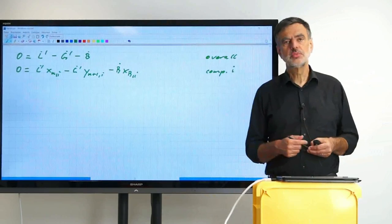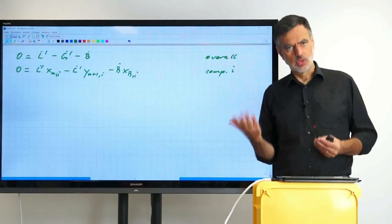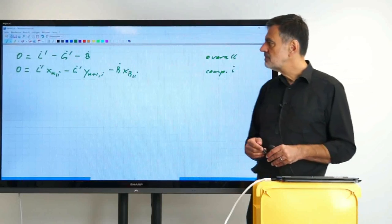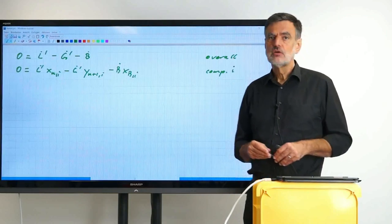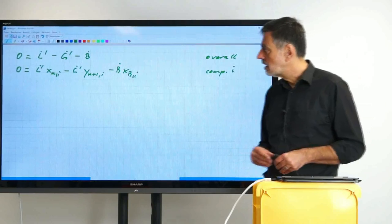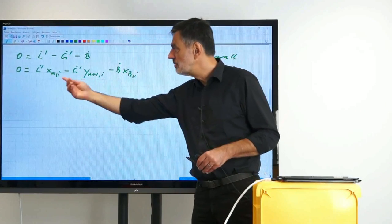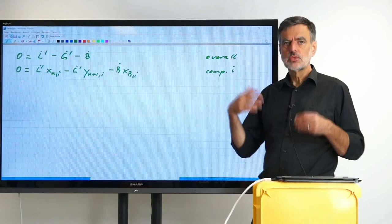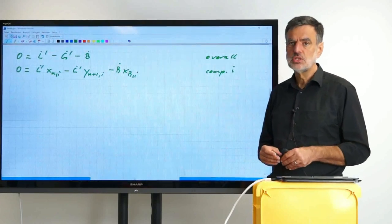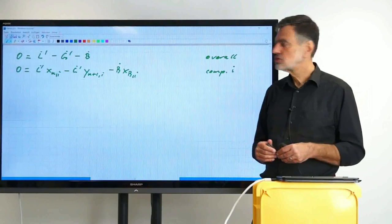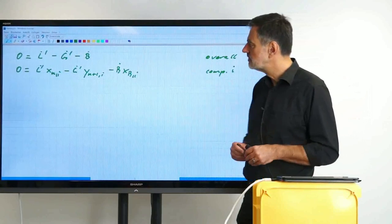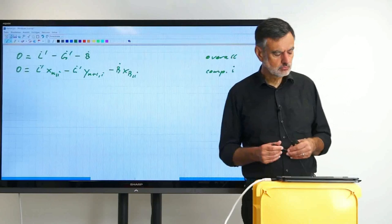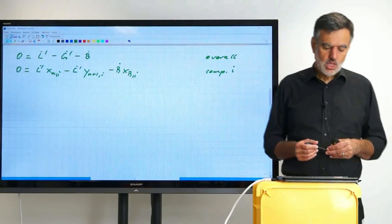In principle, we would also be able to set up the energy balance, but please keep in mind that we have used that already for finding out that the G dot prime and the L dot prime are constant throughout each column section. So that has been used and there is no actual value in adding that. That wouldn't give us any additional insight.